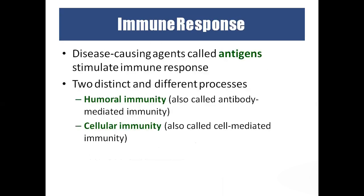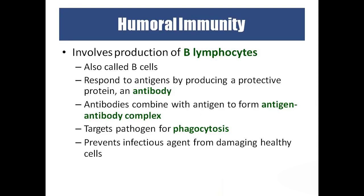Immunity is of two different types: humoral immunity, which is immunity present in the blood — also called antibody-mediated immunity — and cellular immunity, which is immunity at the tissue level. B lymphocytes are responsible for humoral immunity and T lymphocytes are responsible for cell-mediated immunity. B lymphocytes — B meaning bone marrow activated lymphocytes — produce protective proteins called antibodies. The antigen fights against the antibody and forms an antigen-antibody complex, which targets the pathogen for phagocytosis and prevents infection from damaging healthy cells.